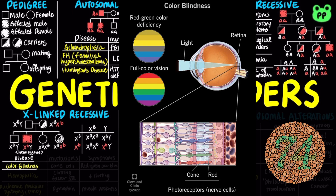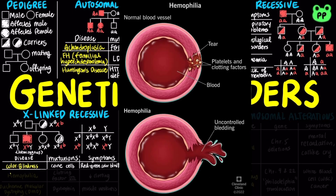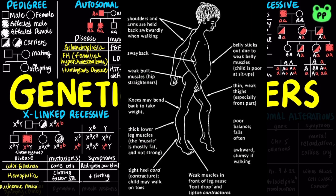Most colorblindness is X-linked, leading to mutation in cone cells. Hemophilia is an X-linked recessive disorder caused by mutation in clotting factor VIII, leading to decreased clotting. Duchenne muscular dystrophy is caused by mutation in the gene that encodes the fiber protein dystrophin, which leads to muscle weakness.